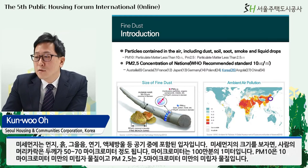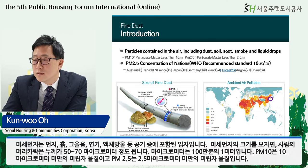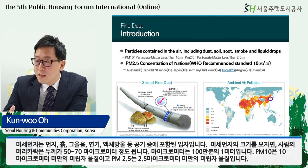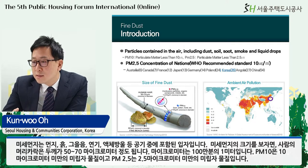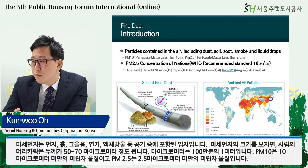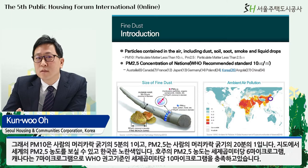Fine dust is particles contained in the air, including dust, soil, soot, smoke, and liquid drops. Looking at the size of fine dust, the human hair thickness is about 50 to 70 micrometers — one millionth of a meter. PM10 is particulate matter less than 10 micrometers, and PM2.5 is particulate matter less than 2.5 micrometers. So PM10 is one-fifth the thickness of human hair, and PM2.5 is one-twentieth.